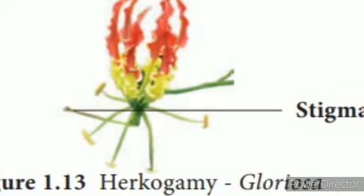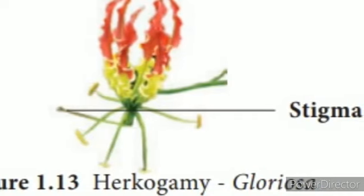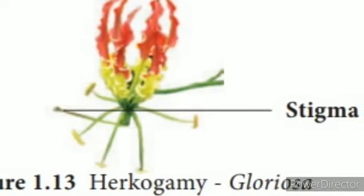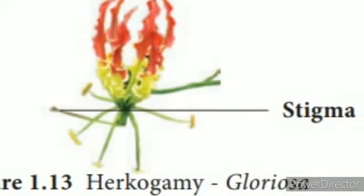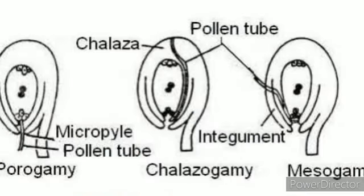The next strategy in bisexual chasmogamy flowers is dioecy, which is also called unisexuality, in which only male or only female flowers are produced on a plant. Examples include castor and papaya.